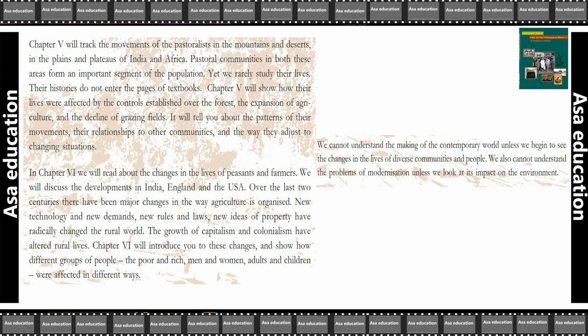In Chapter 6, we will read about the changes in the life of peasants and farmers. We will discuss developments in India, England and USA. Over the last two centuries, there have been major changes in the way agriculture is organized. New technology, new demands, new rules and laws, and new ideas of property have radically changed the rural world.